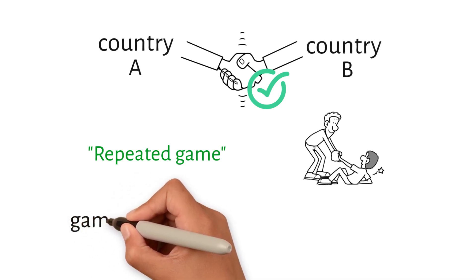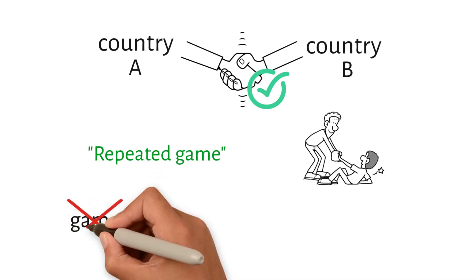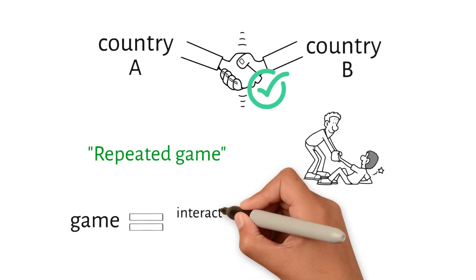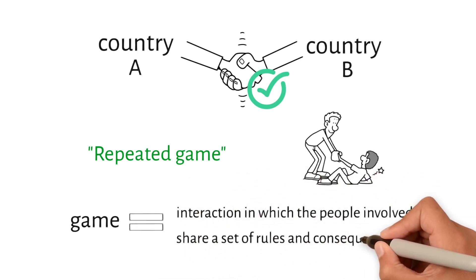In real-life situations, the word game is not a good way to describe what is going on. Even though game theory is about games like chess, monopoly, etc., the word game refers to any interaction in which the people involved share a set of rules and consequences.